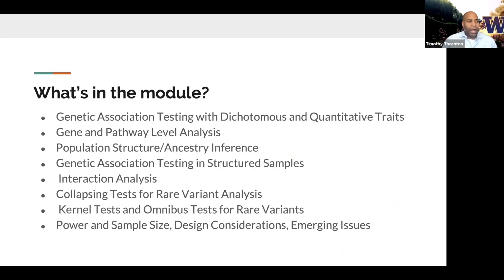This module will cover a lot of topics. We'll first talk about genetic association testing with dichotomous traits, such as case-control studies. Then we'll move on to association testing with quantitative traits. We'll cover gene and pathway-level analysis for association testing using many variants jointly. We'll also discuss how to infer genetic ancestry and differences of population structure in the data, as well as how to account for it, including both relatedness and population structure in structured samples.